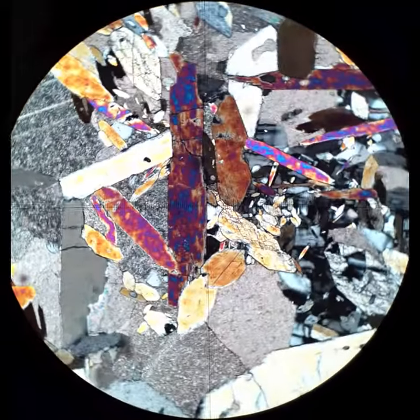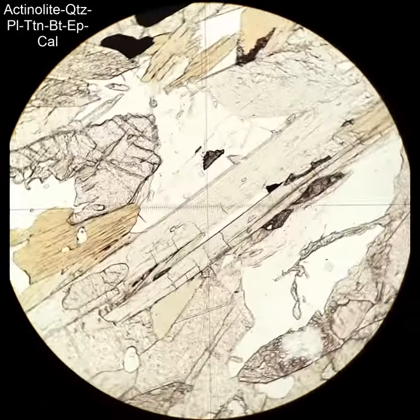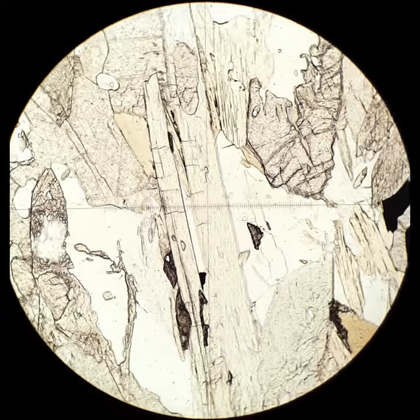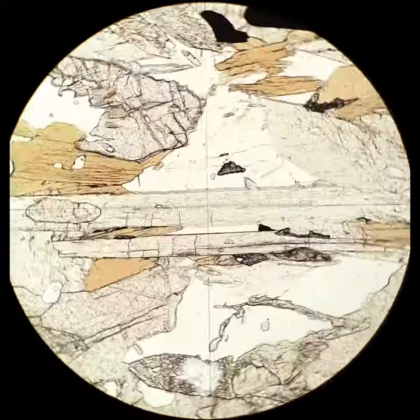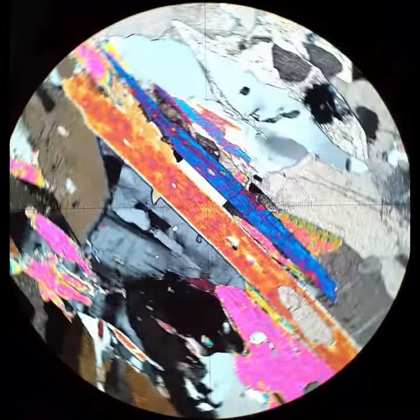You may notice that they have inclined extinction. That's because actinolite and tremolite are clinoamphiboles. Although it's very subtle, actinolite has a very pale green pleochroism, so that long crystal that goes across the entire center of the field of view is an actinolite crystal. And then you can see it's got that orange-yellow interference color, as well as the blue and purple of the other crystals.